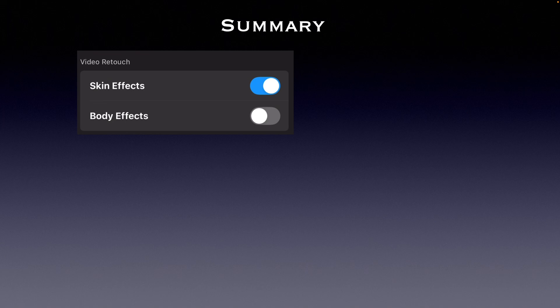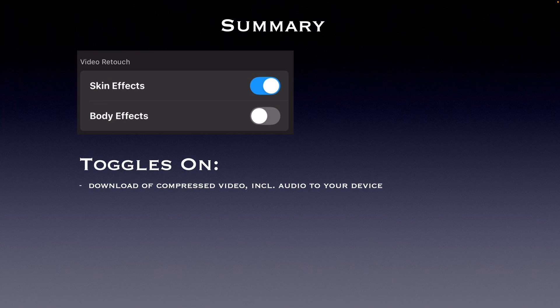Now to summarize, here are your options. With the toggle switch set to on, the DJI Fly app downloads a compressed video at a lower bitrate that includes the audio mixed in.